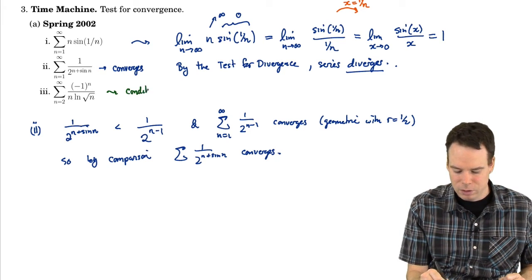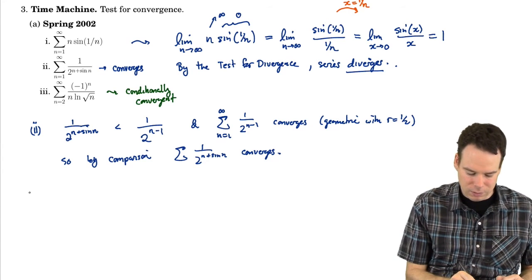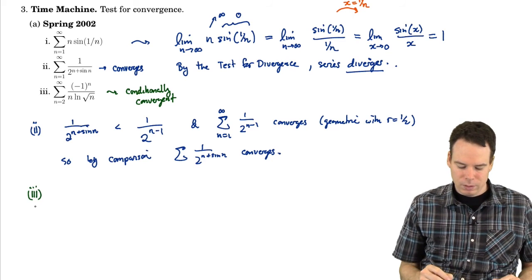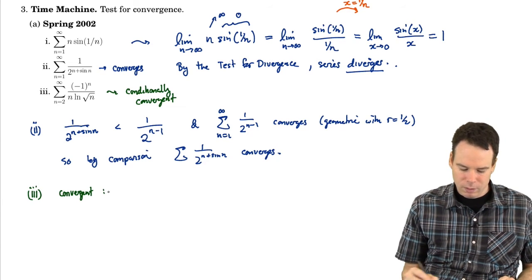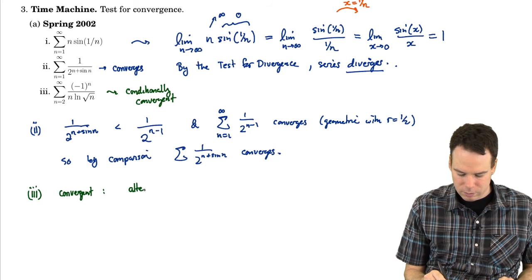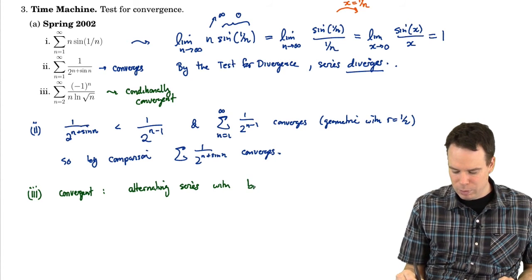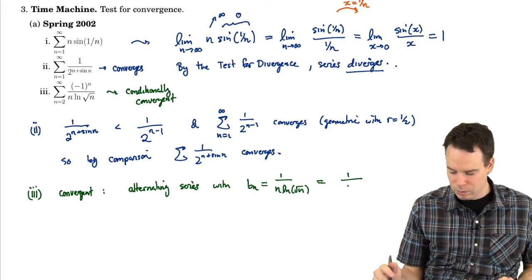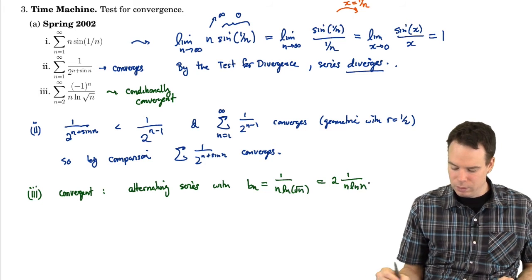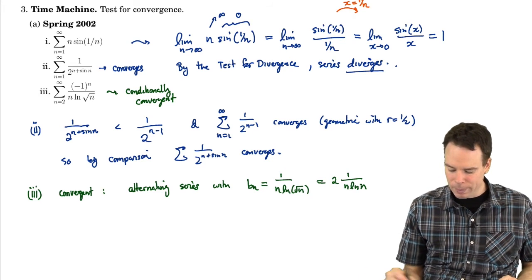So that's going to be my claim right now. I'm going to claim it's conditionally convergent. It's convergent because of the negative signs appearing, because it's an alternating series. So, how do we get that? Well, the first thing we're going to do is we're going to show it's convergent. So this is an alternating series, alternating series with these bn's being 1 over n log root n. Or another way to write that is 2 times 1 over n log n.